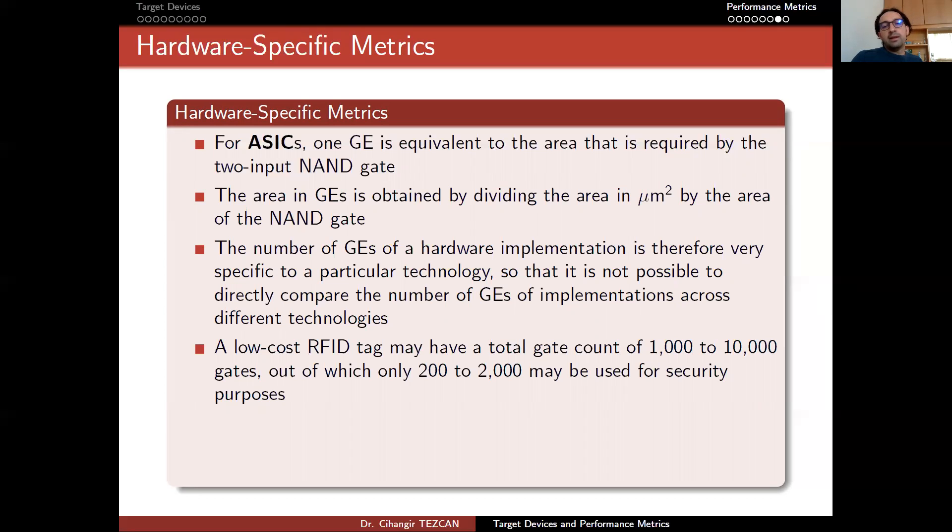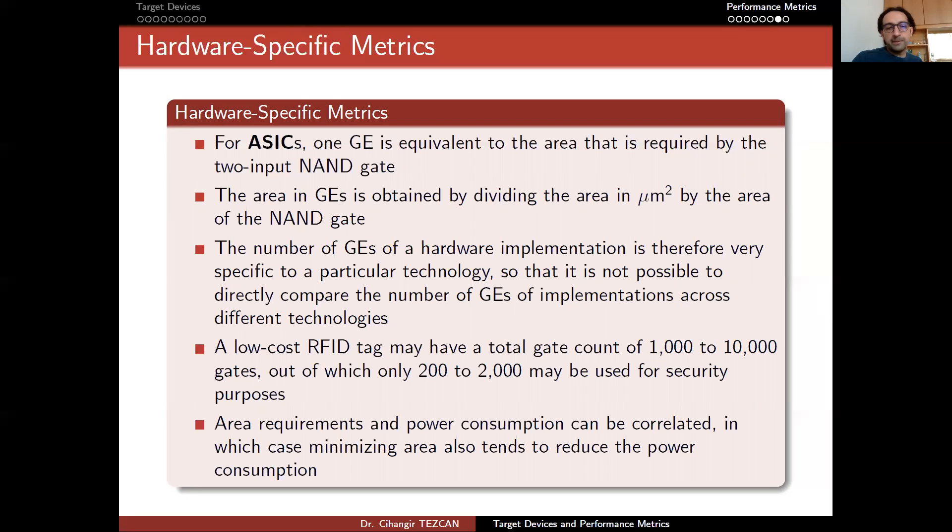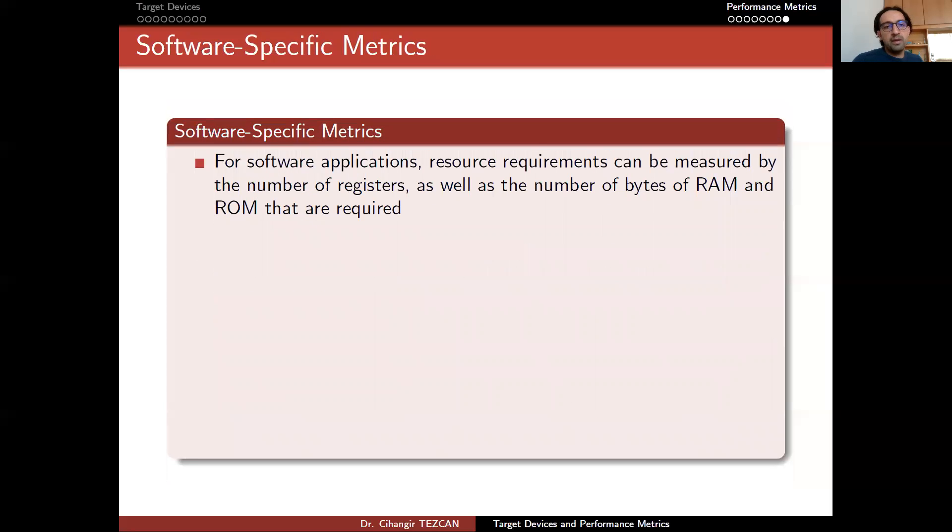Out of which only 200 to 2,000 may be used for security purposes. So it doesn't matter how many gates the device actually has because you have like 20% of that to be used in security purposes. Area requirements and power consumption can be correlated, in which case minimizing area also tends to reduce power consumption. This is actually valid for even high-end devices like CPUs and GPUs.